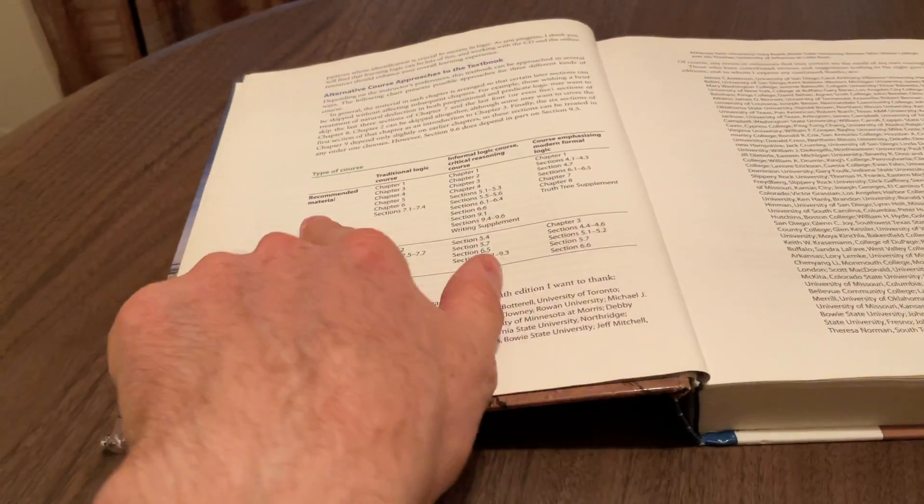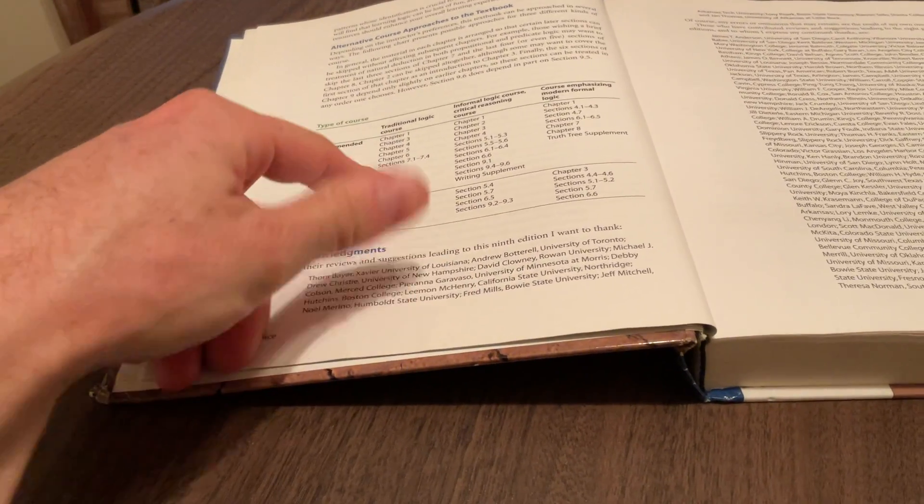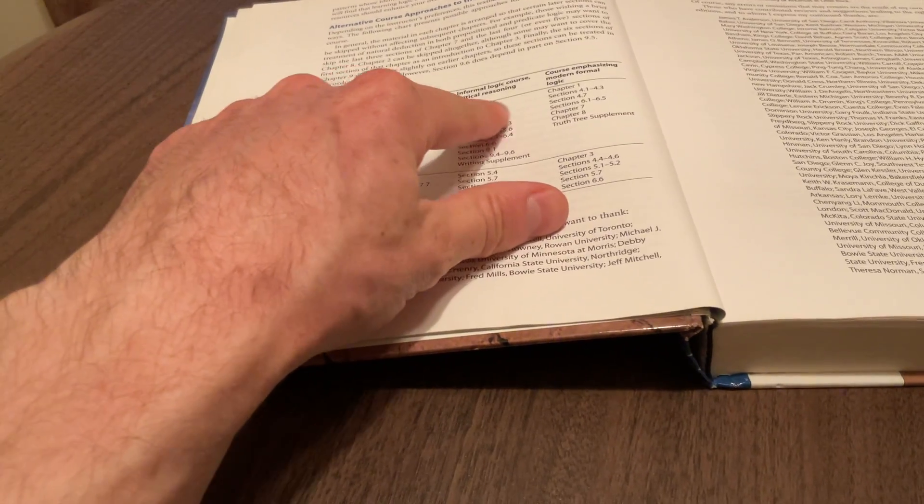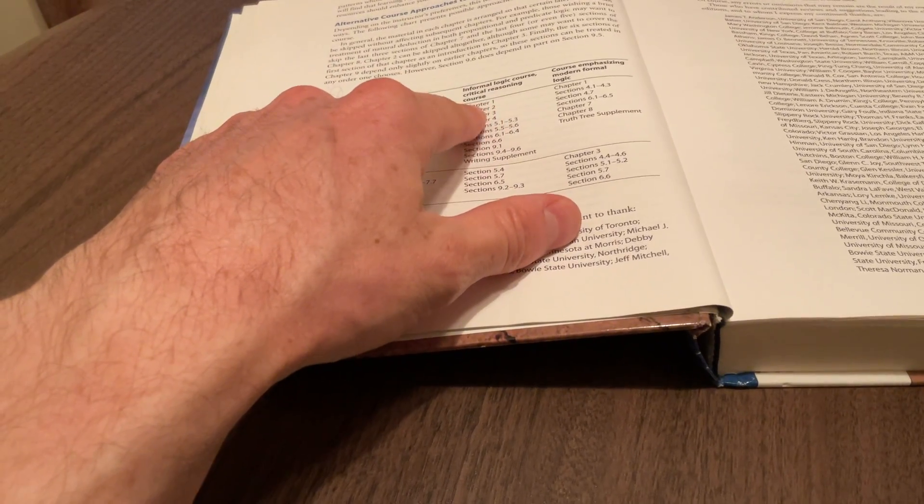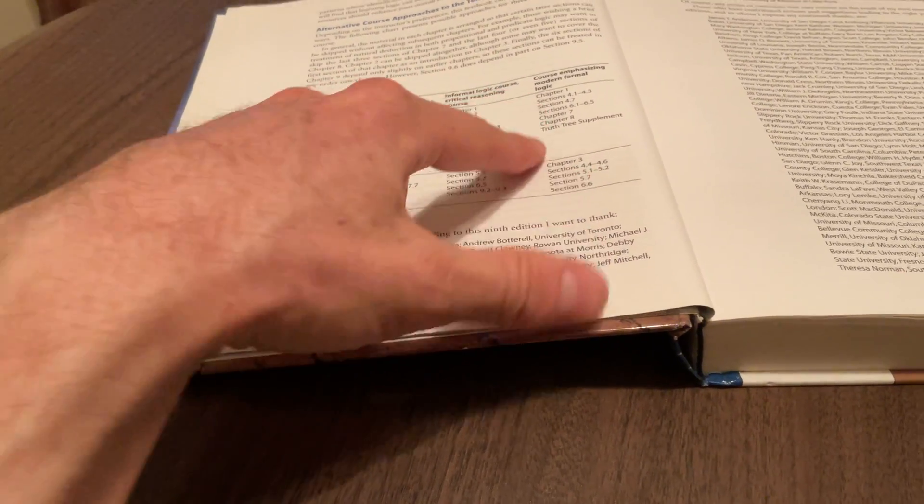Here, for example, it says what kind of course are you in. Here's a recommendation: if this is a traditional logic course, cover these chapters. If this is a more informal logic course on critical reasoning skills, do these chapters and sections. Or if this course is on modern symbolic logic, focus on this stuff.